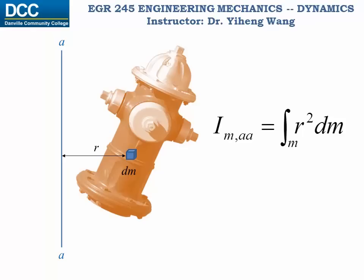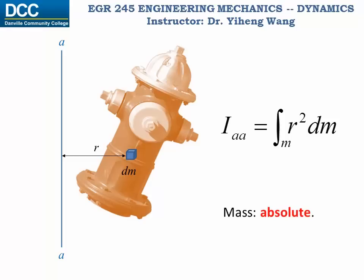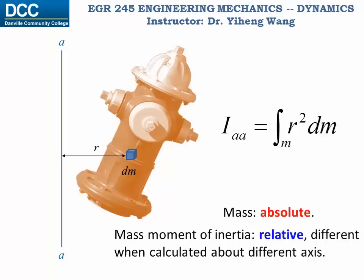Unlike mass, which is absolute, mass moment of inertia is like moment — it is always relative and is different when calculated about different axes.